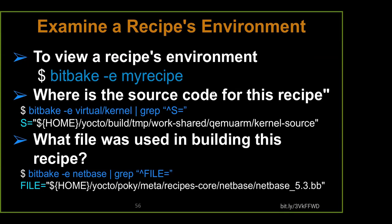You can look at what the environment is going to be for a particular recipe. BitBake -e will show you where you're going to build, where the output directory is, what options you're passing to the compiler or linker. We're going to look for the S variable to find out where our source is going to be unpacked.